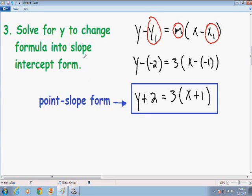And in order to do that, you want to solve for y to change the formula into slope-intercept form. In other words, in order to change this in the slope-intercept form, you just want to solve for y. You want to get y by itself. So in order to do that, the first thing I like to do is I want to distribute this 3 with the x and the 1.